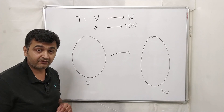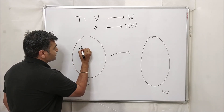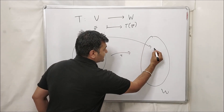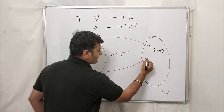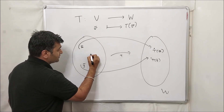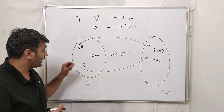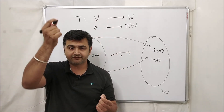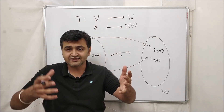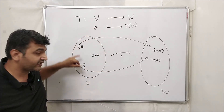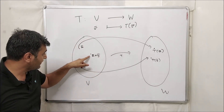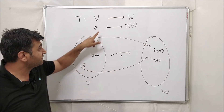For the first property, take two vectors x̄ and ȳ from vector space V. Look at their images under T: T(x̄) and T(ȳ). Now add x̄ and ȳ. Note that x̄ + ȳ lies inside V because V is a vector space — closure under addition guarantees addition won't go outside the set. That is precisely why we need V to be a vector space.